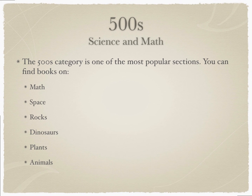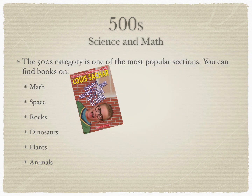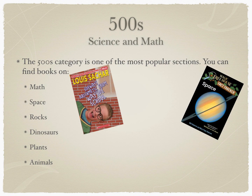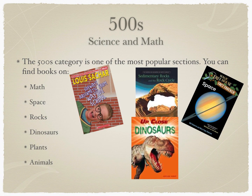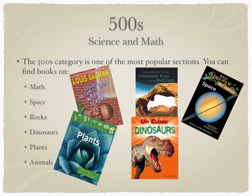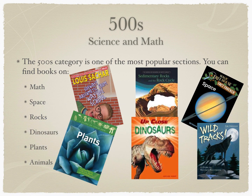Five Hundreds: Science and Math. The Five Hundreds category is one of the most popular sections. You can find books on Math, Space, Rocks, Dinosaurs, Plants, and Animals.